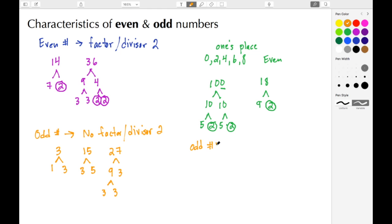Odd numbers have odd numbers in the ones place, and those numbers would be 1, 3, 5, 7, and 9.